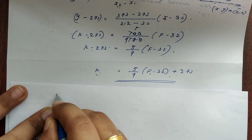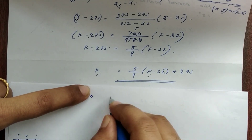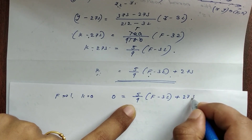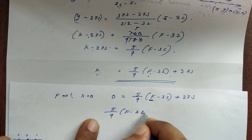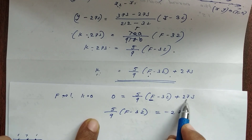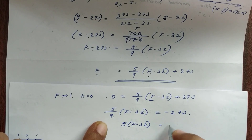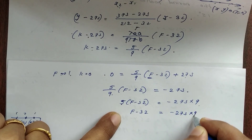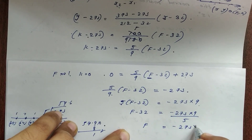Now we find F when K equals 0. Substituting K equals 0: 0 equals 5 by 9 into (F minus 32) plus 273. So 5 by 9 into (F minus 32) equals minus 273. Multiplying both sides by 9: 5 into (F minus 32) equals minus 273 into 9. So F minus 32 equals minus 273 into 9 divided by 5. Solving, F equals approximately minus 459.4.